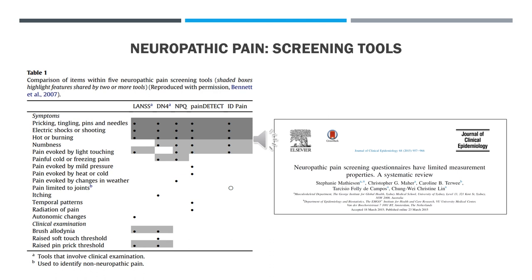A range of neuropathic pain screening tools have been developed and are used in clinical practice, though they are not diagnostic and should only be used in conjunction with a clinical examination and history. Some are based purely on patient self-report measures; others include a small clinical examination component. A systematic review from 2015 suggests these instruments should be used with some degree of caution, as their limited measurement properties may affect the reliability and validity with which we can infer neuropathic pain.